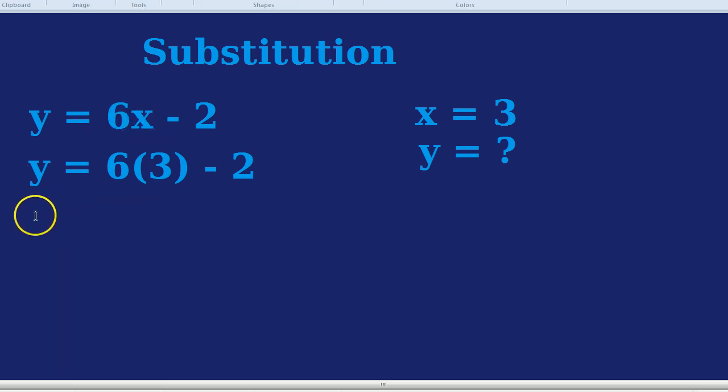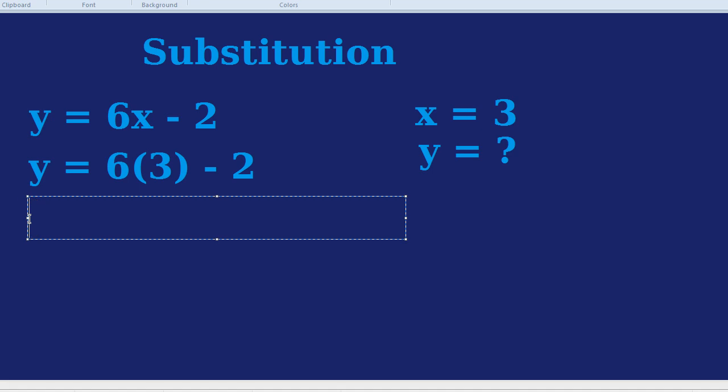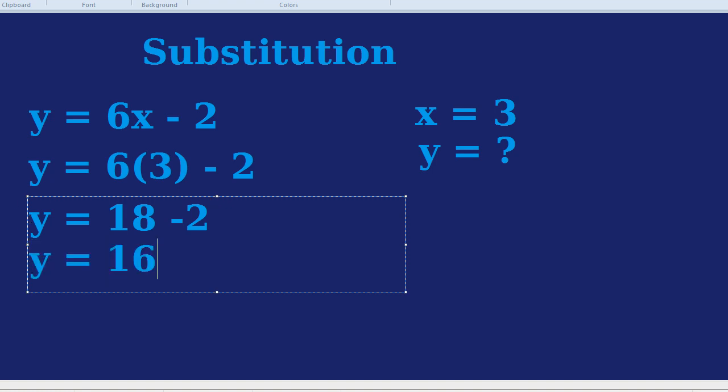Let's find out what y would be then. Well, 6 multiplied by 3 is 18, and we still have the minus 2. 18 take away 2 is 16. So the answer to the riddle was y would be 16 if you substituted x as being 3.